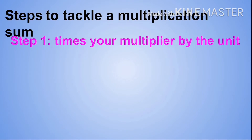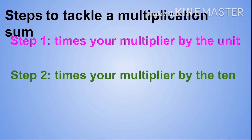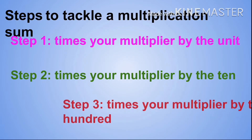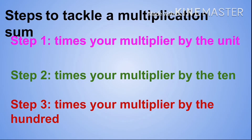Now let's look at the steps we need to follow to tackle a multiplication sum. Step 1: times your multiplier by the unit. Step 2: times your multiplier by the tens. Step 3: times your multiplier by the hundreds. Let us try to work through the following multiplication equation using these steps.